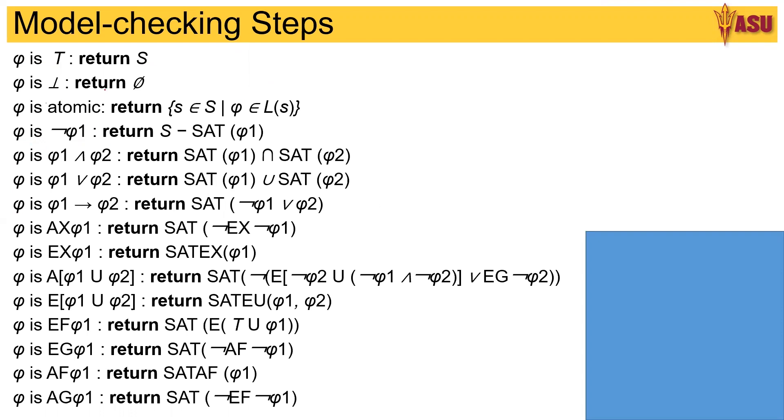If φ is ¬φ1, then it is S minus whatever are the literals that are used in φ1. ∩ is same as intersection and ∪ is same as union.